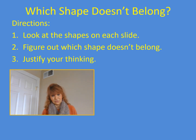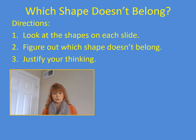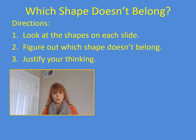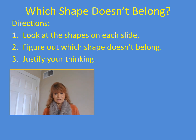I want to take a couple of minutes to go over the third one — I want to make sure you're clear on what that means. To justify your thinking means you're going to explain why you chose the shape you chose. You're going to give a mathematical reason as to why you believe the shape you chose doesn't belong. And this is really important — it's what makes this activity a little unique. There is no one correct answer. In fact, two people could look at the same slide and come up with different answers. It just depends on your reasoning, so being able to explain why is very, very important.